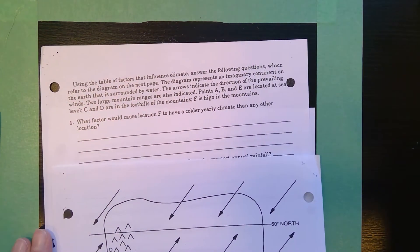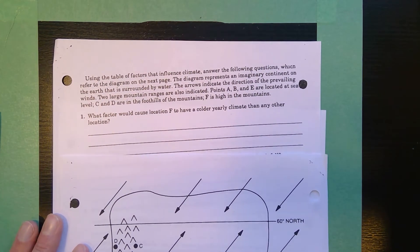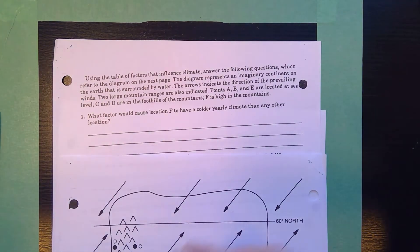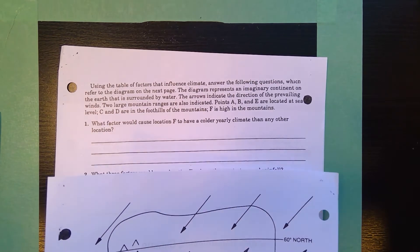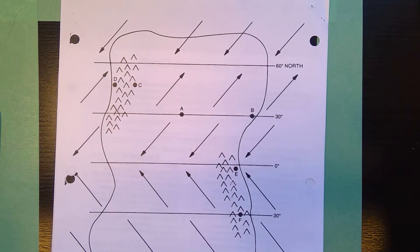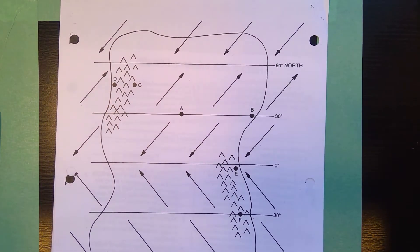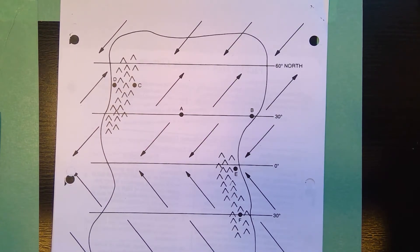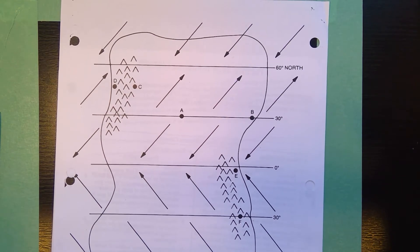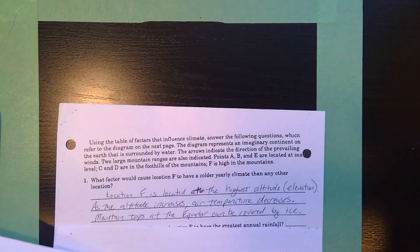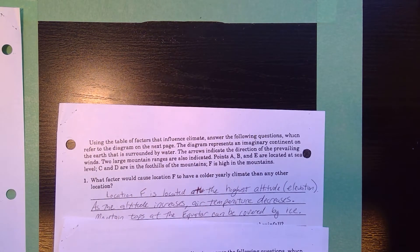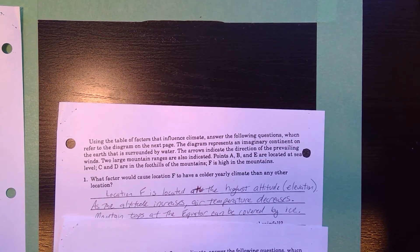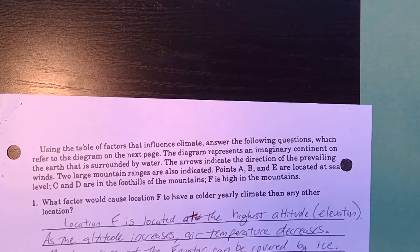Looking at the first sequence of questions, number one says, what factor would cause location F to have a colder yearly climate? Well, looking at F, we've already looked at F. F was at 30 degrees south, relatively close to the equator, closer than us, but definitely being at the top of a mountain would make it cold.